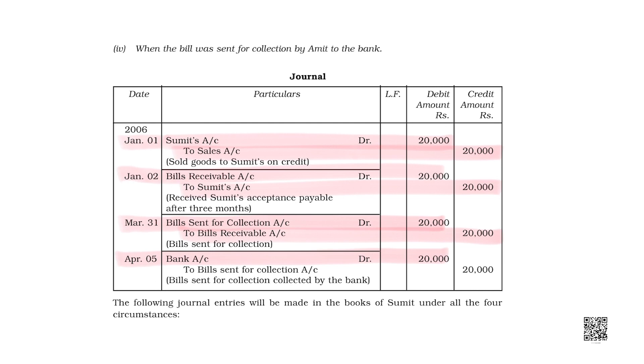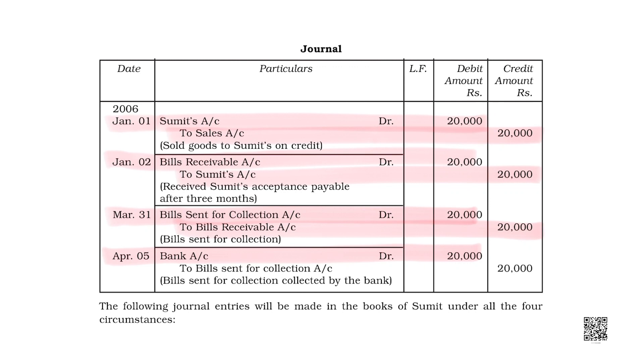On 5th April the bank collected that money. When the bank collected it, bank account would be debited since the money came in, and that slip would be cancelled because you have collected the money and got the credit in your bank. Bank account debited and bills sent for collection credited.